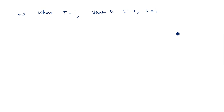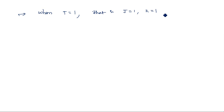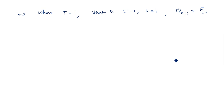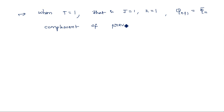When T is equal to 1, the output is the complement of the previous state. So Qn+1 will be the complement of the previous state, Qn-bar. When T=0 the output is the previous state, but when T=1 it is the complement of the previous state.